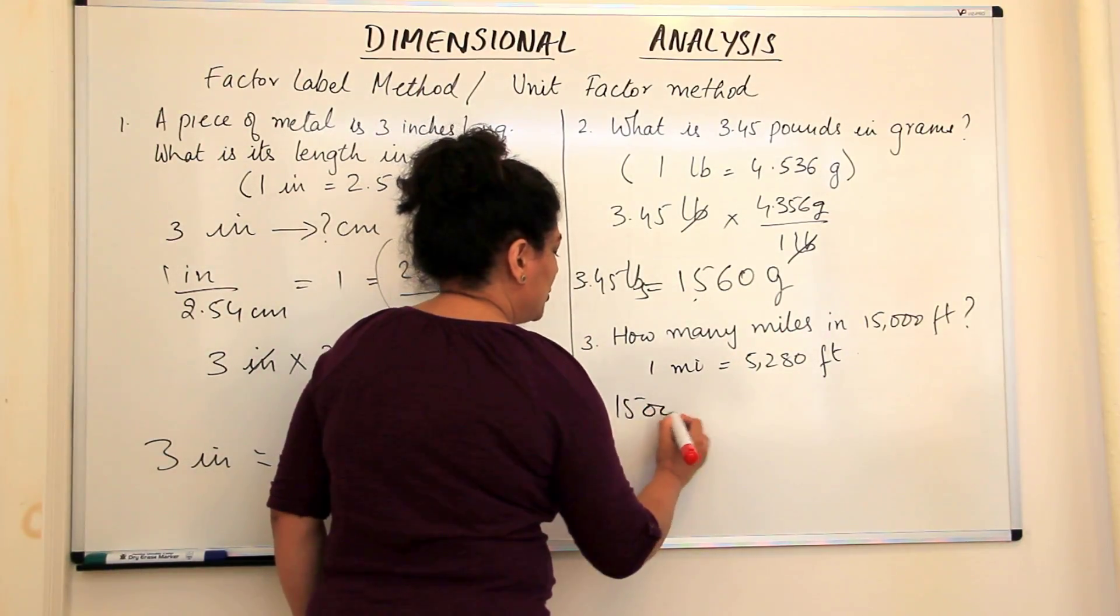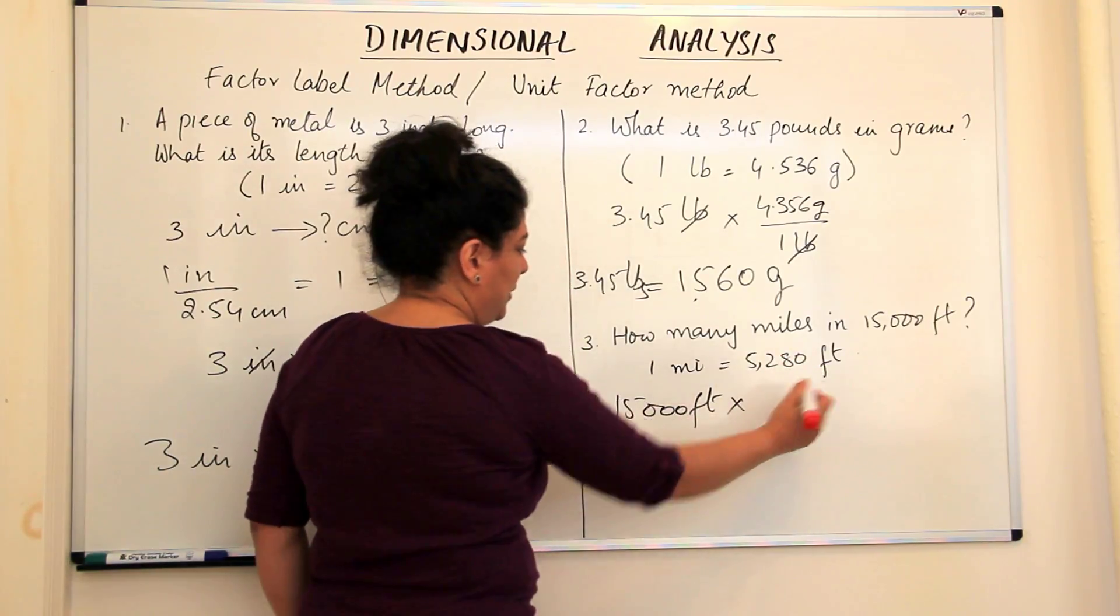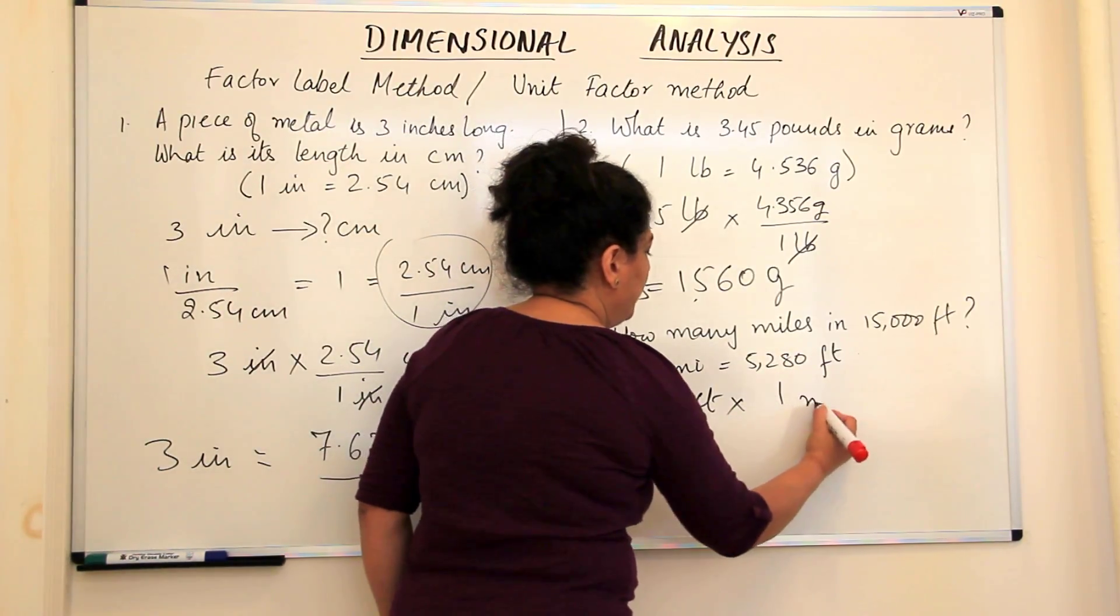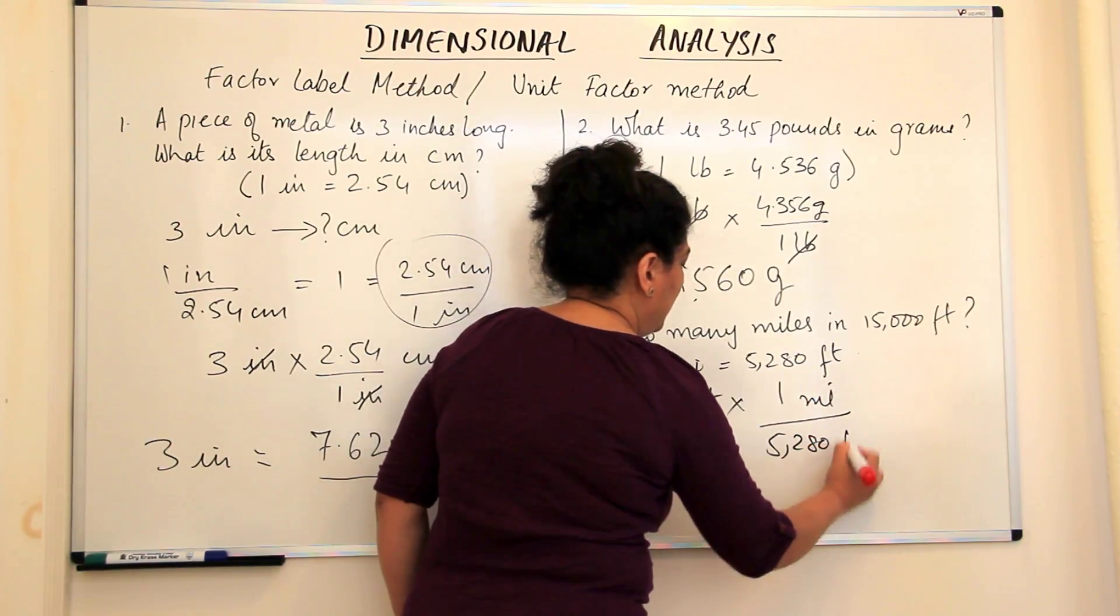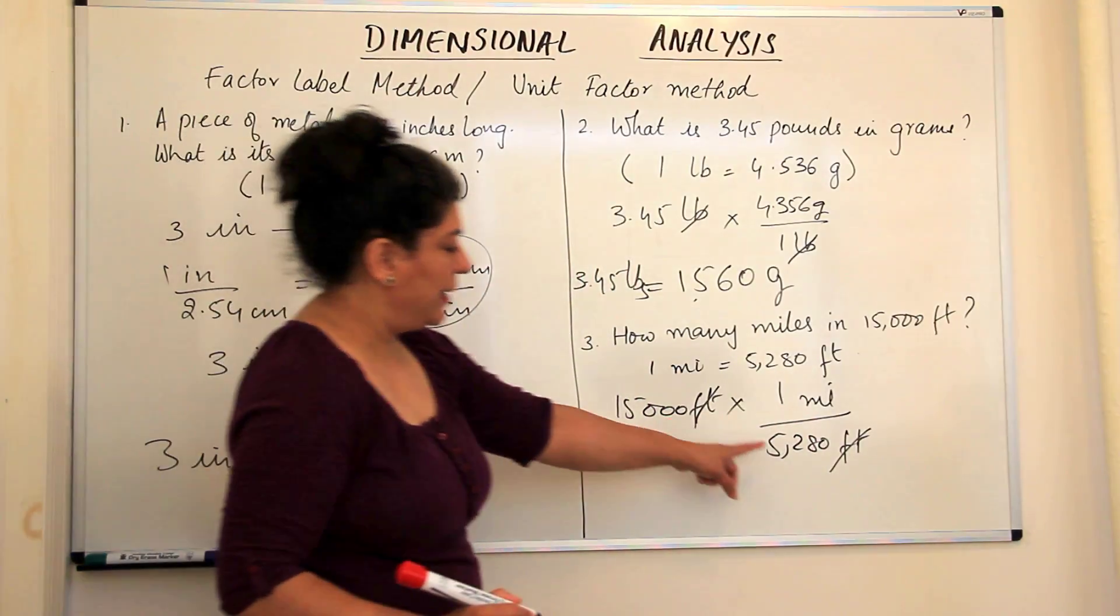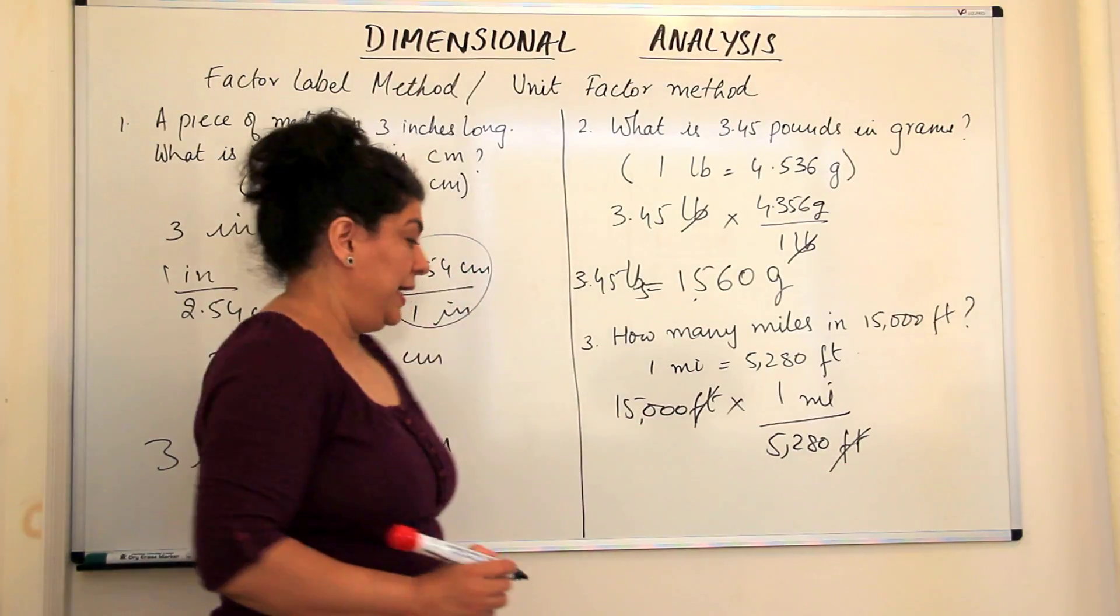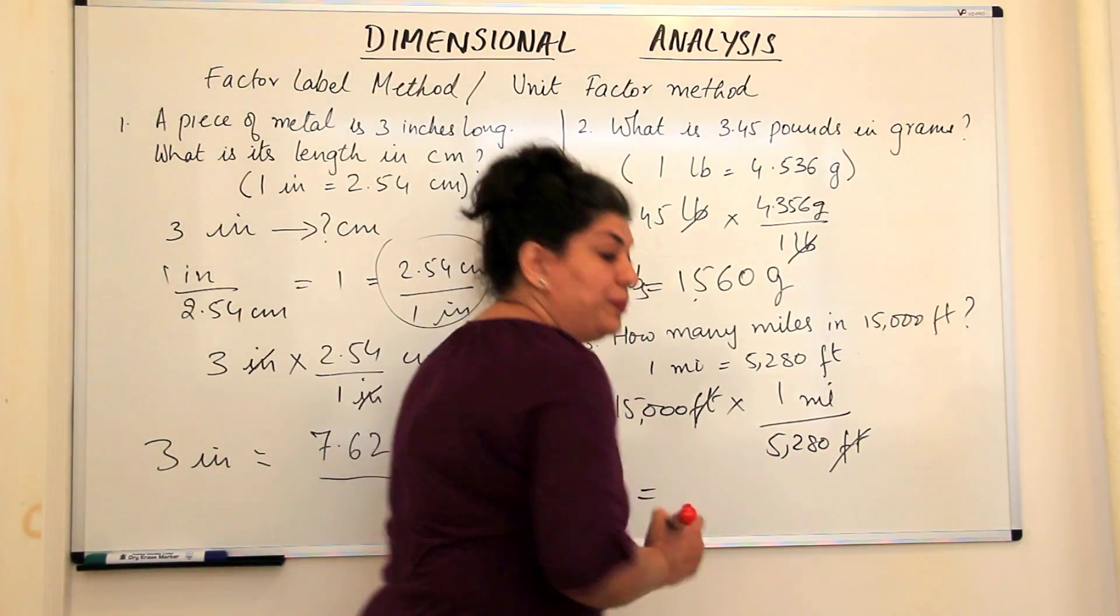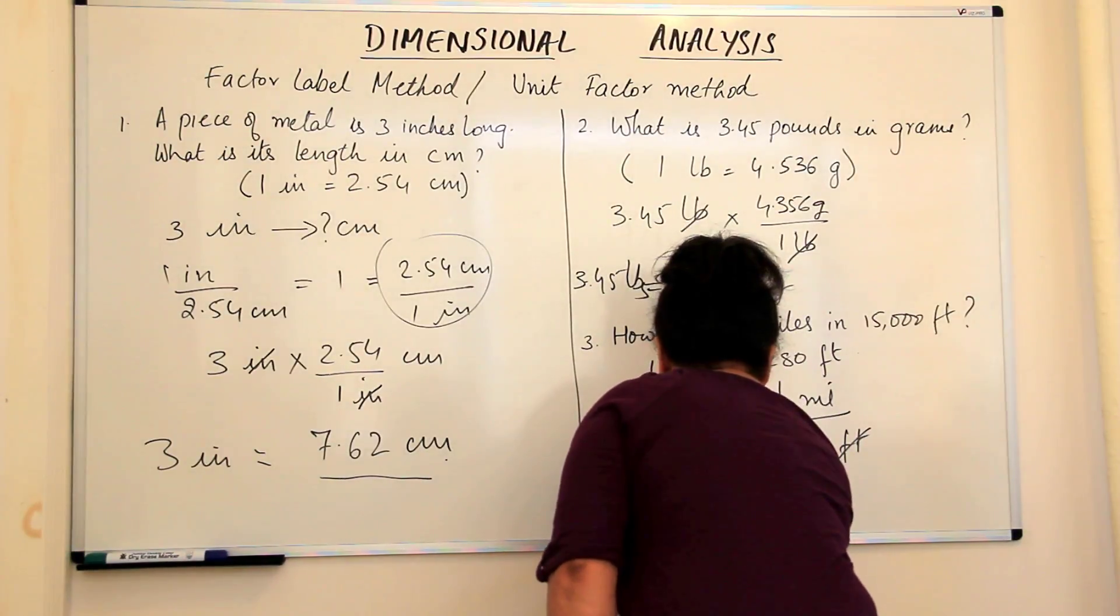15,000 feet into—the feet should come in the denominator, so this would be 1 mile upon 5,280 feet. The feet get cancelled, which means that I now have to divide 15,000 by 5,280. This result would be equal to 2.86 miles.